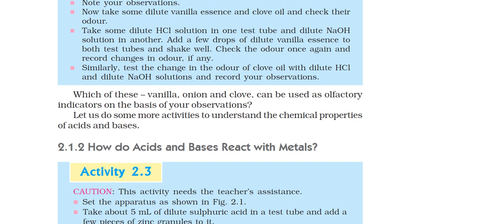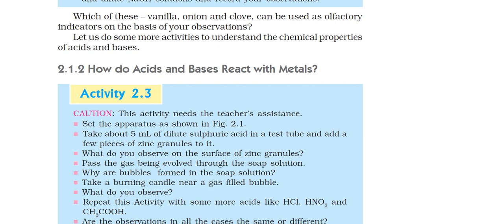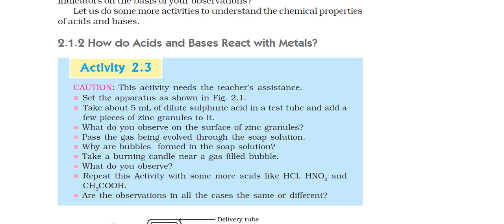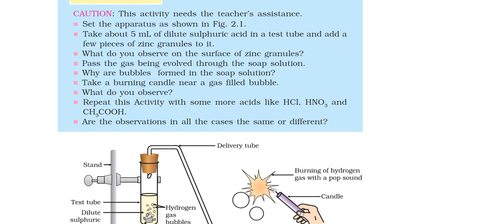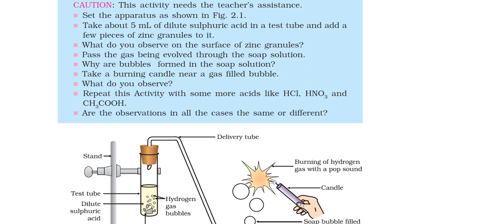We will see some other activities so that we can understand the chemical properties of acids or bases, which is the way the acid or base reacts with metal. This is the activity that you have to do under your teacher or an elder person. You have to set the apparatus which we have given in the figure. Take 5 ml of dilute sulfuric acid in a test tube and add a few pieces of zinc granules. Now observe the surface of zinc granules. Then pass the evolved gas through the soap solution.